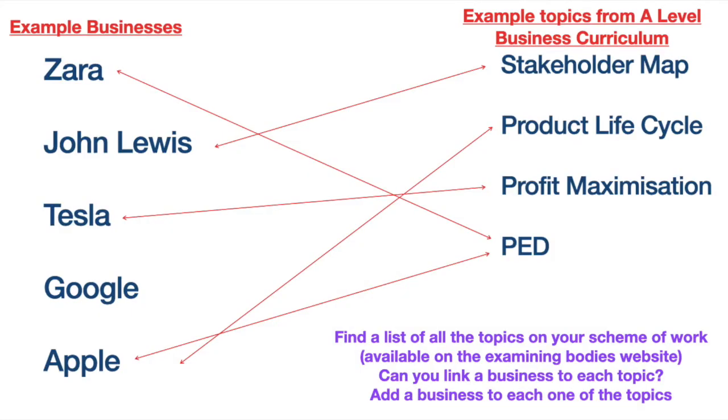I can also talk about Tesla in terms of the Stakeholder Map — although shareholders have high interest and high power, Tesla has put customers in the most important box and believes customers have the power to turn the business's fortunes around. Price Elasticity of Demand: Apple creates products that are really inelastic because of their branding and the status of having their products. Zara, by contrast, is in a very competitive market where products are elastic and they have to compete with the likes of H&M and Next.